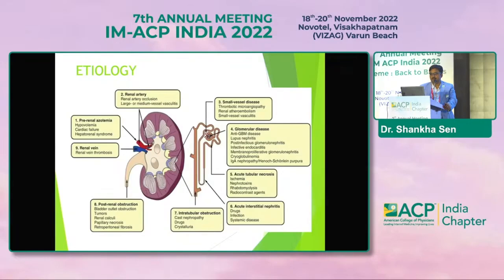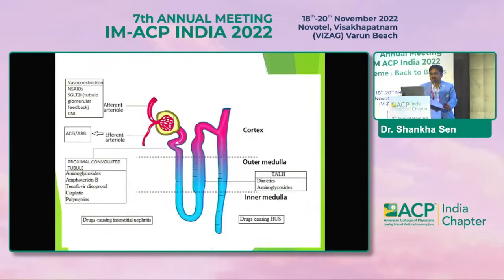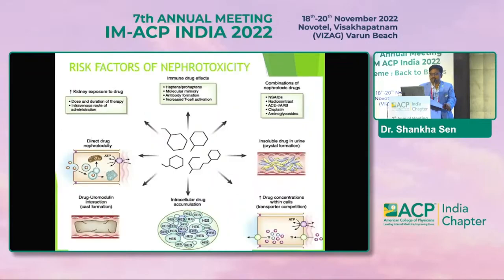The renal cause of AKI can occur at various stages along the nephron. Vasoconstriction in the afferent arterioles is caused by NSAIDs, and SGLT2 inhibitors act via tubuloglomerular feedback. ACE inhibitors and ARBs act on the efferent arterioles. At the proximal convoluted tubules, the relevant molecules are aminoglycosides, amphotericin B, tenofovir, cisplatin, and polymixins. At the thick ascending loop of Henle, diuretics and aminoglycosides act. Risk factors for nephrotoxicity are inbuilt, and we must be very careful.